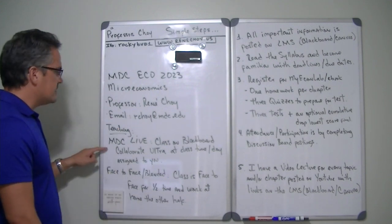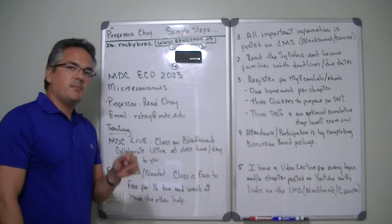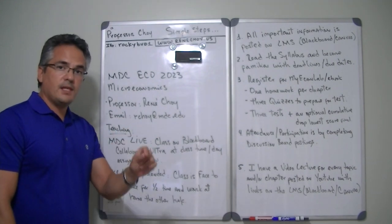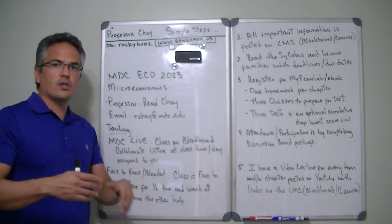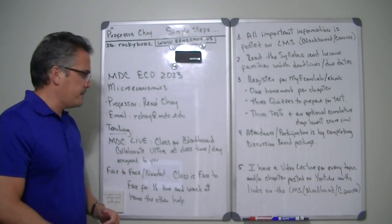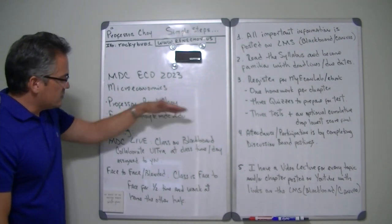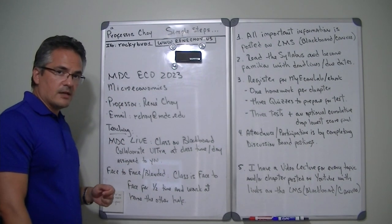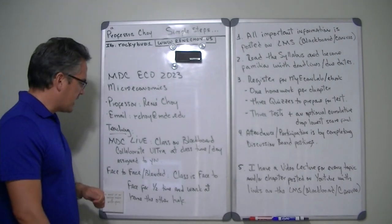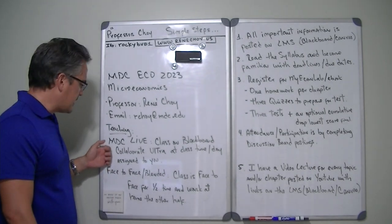If your class is MDC Life, we're going to meet every class time and day in our computers basically. So we're going to see each other, but we're going to see each other online. And we're going to meet in somewhere called Blackboard Collaborate Ultra or some other online classroom. And I'll let you know depending on the class that you're taking, but we're going to meet every class day and time.